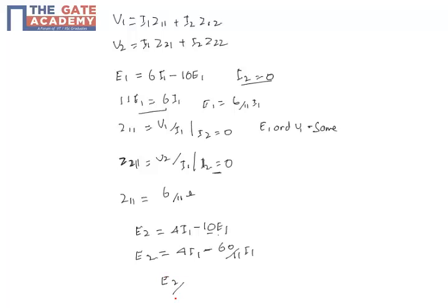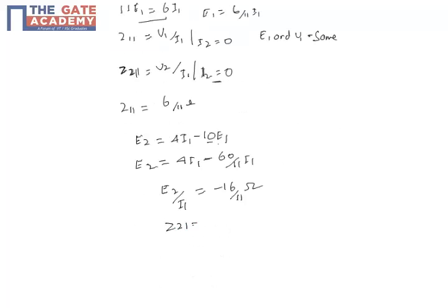So, e2 divided by i1 is equal to minus 16 by 11. So, z21 is equal to minus 16 by 11. So, option c is the correct option.